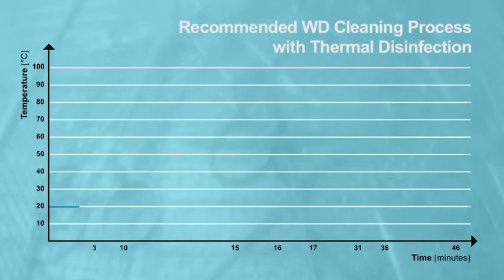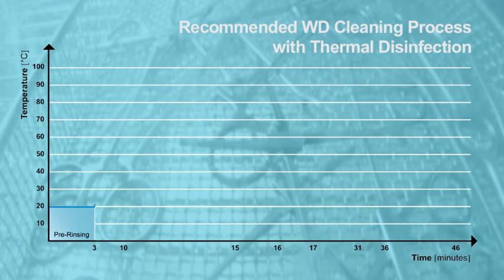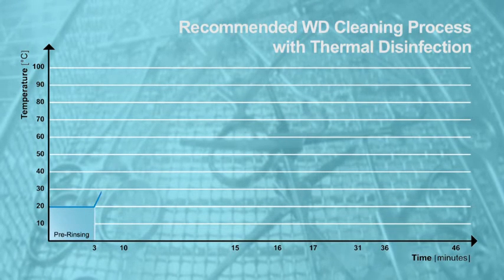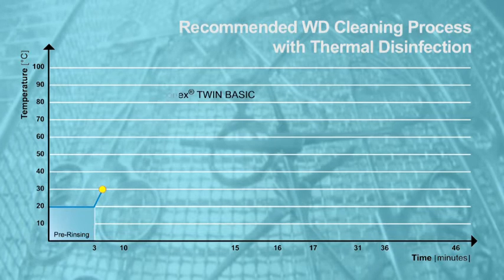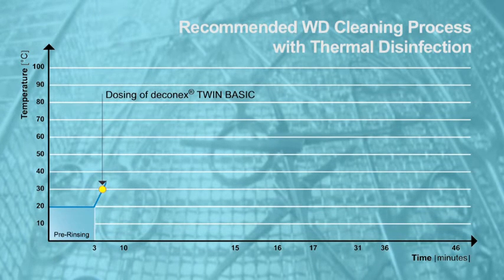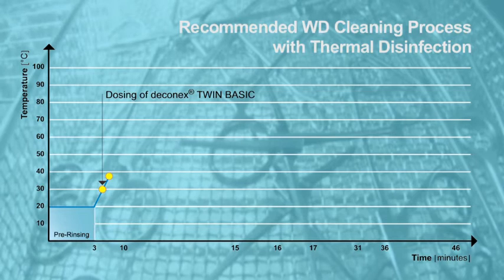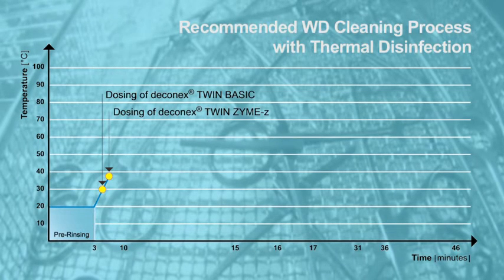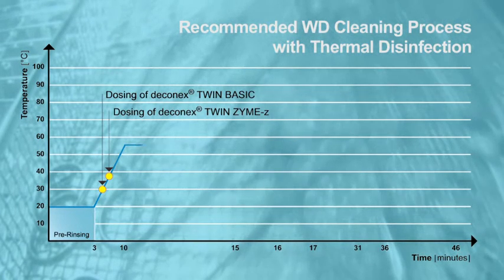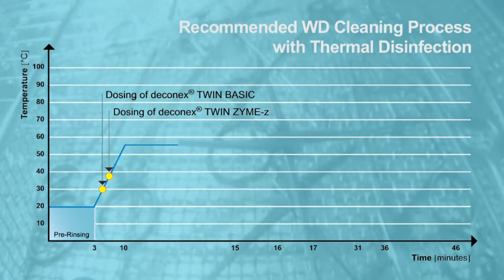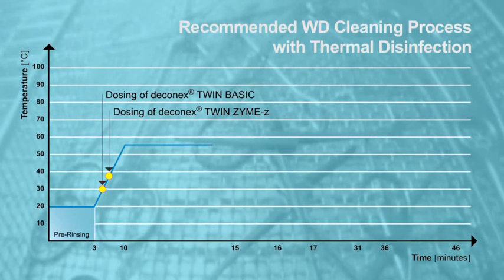It starts with a cold pre-rinse for three minutes, followed by the main cleaning step, consisting of the dosing of Deconnex Twin Basic at approximately 30 degrees Celsius, and the dosing of Deconnex Twinzyme Z at approximately 38 degrees Celsius, and a subsequent active cleaning for five minutes at 55 degrees Celsius.